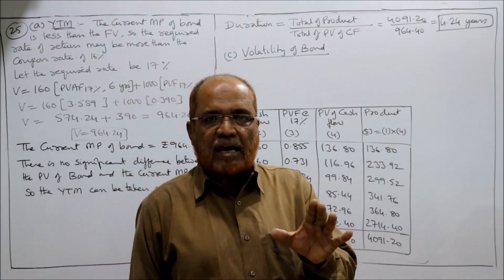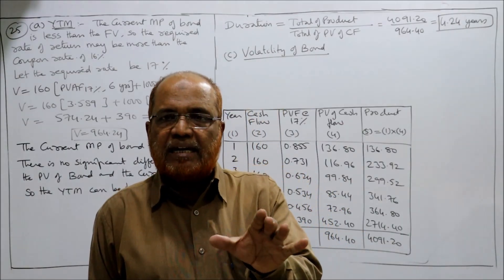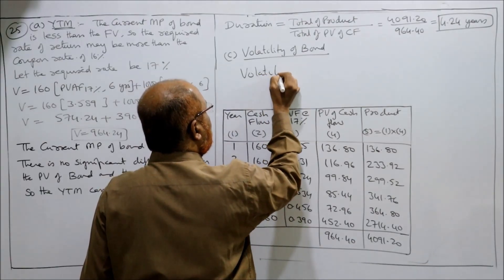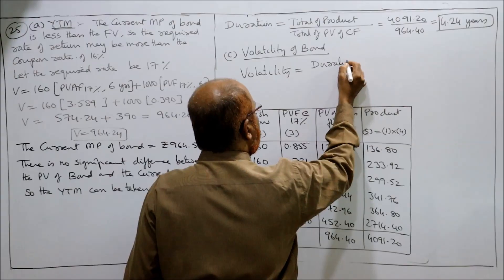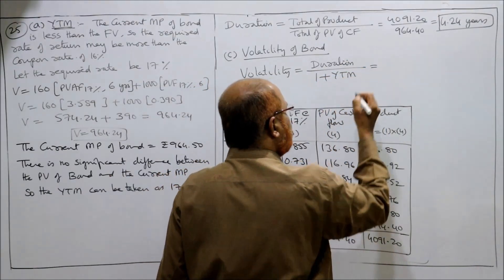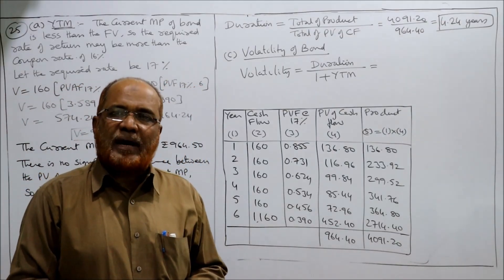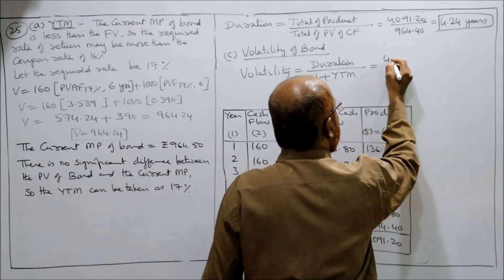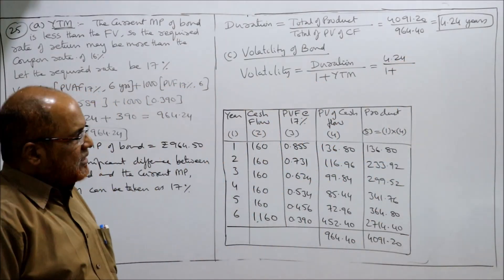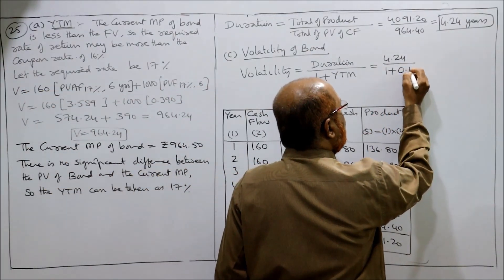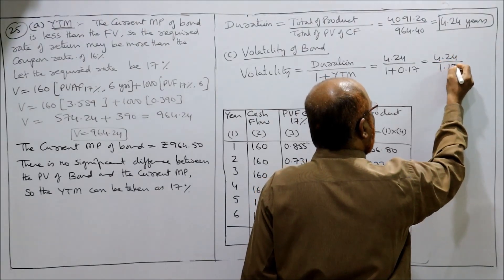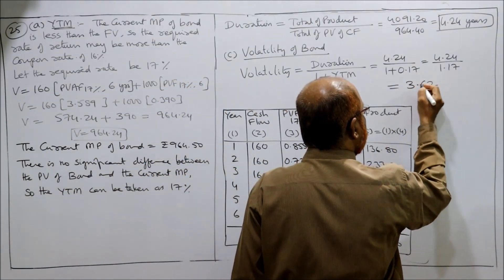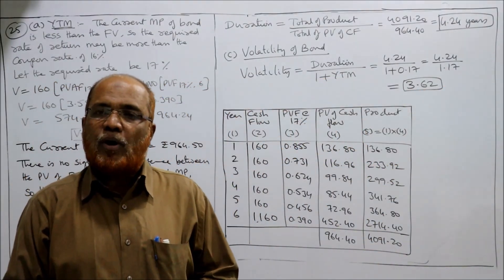The volatility can be computed by the following formula: Volatility = Duration ÷ (1 + YTM). The duration we got is 4.24, and the YTM is 17%, so: 4.24 ÷ 1.17 = 3.62. Therefore, the volatility of the bond is 3.62.